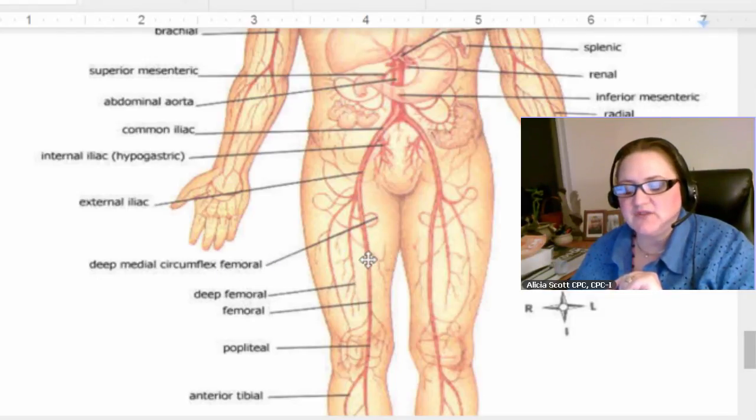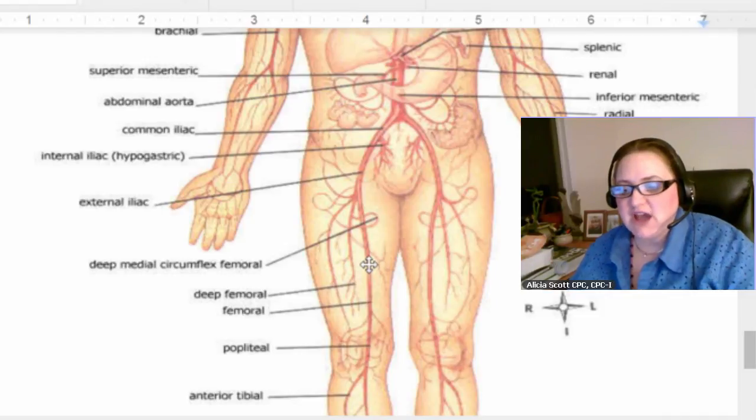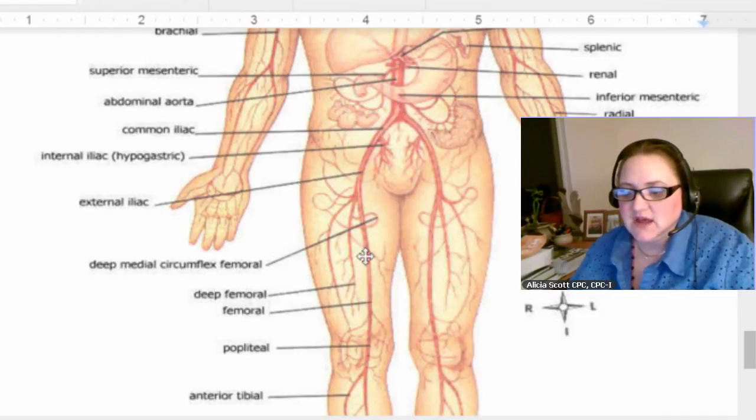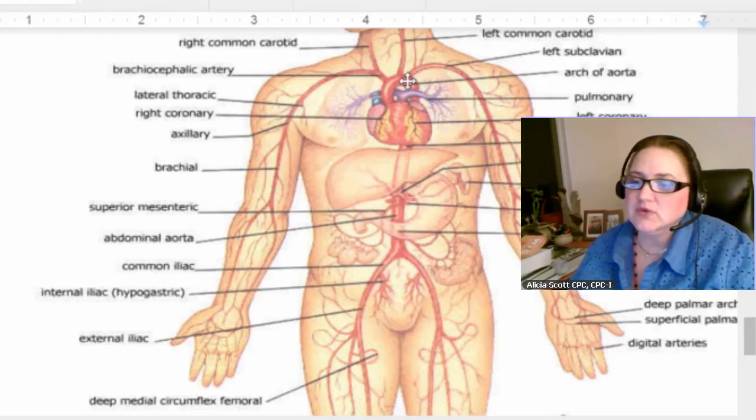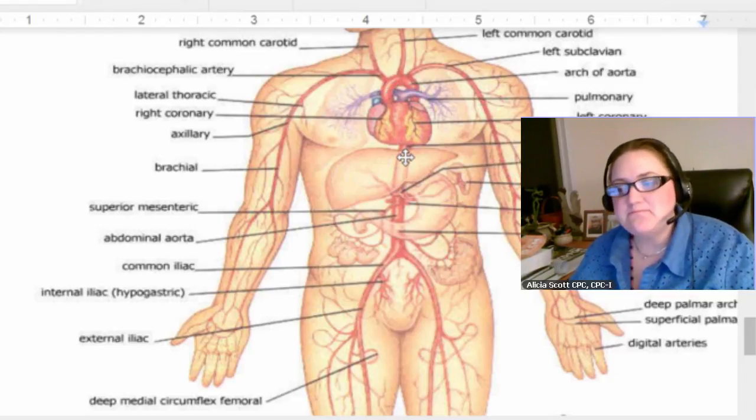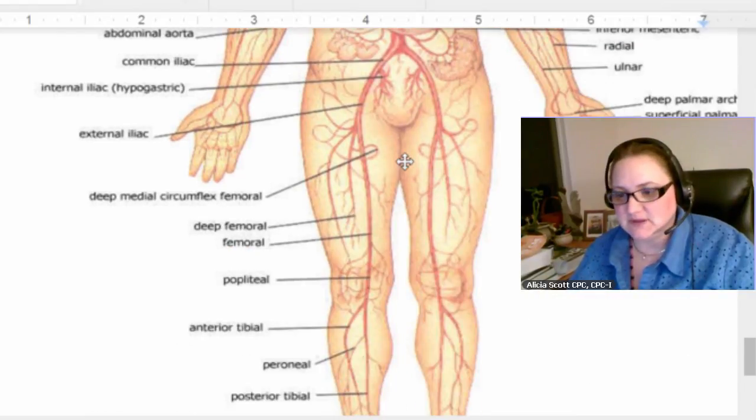But this is where if they're going to do some work on the heart, see how big this pathway is? A lot of times they'll go in right here in this femoral artery and they'll run that wire and that little camera all the way up through the aorta and down into the heart. It's amazing what they can do. Pretty cool.